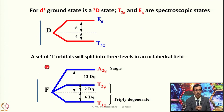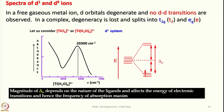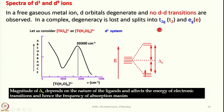This is for the F orbital and this is for the D state — the D state and the F state are essentially the same in terms of splitting pattern. Now let us look into spectra of D1 and D9 species. In a free gaseous metal ion, D orbitals are degenerate and no d-d transitions are observed. But in a complex, degeneracy is lost, mixing also takes place, and splitting occurs into T2G and EG for octahedral complexes and T2 and E for tetrahedral complexes.